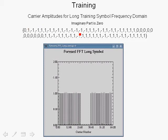The magnitude is always 1 or minus 1, and the imaginary part is set to 0. Also, we have a 0 at DC, and we have nulls in the guard intervals in the frequency domain.